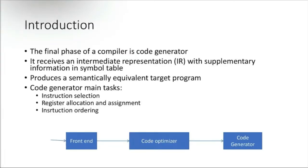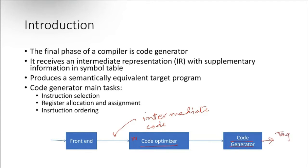We have discussed about all these things. We have the code optimizer — intermediate code needs to be optimized, then this optimized intermediate code is sent to the code generator, which gives us the target code. The final phase of the compiler is the code generator.